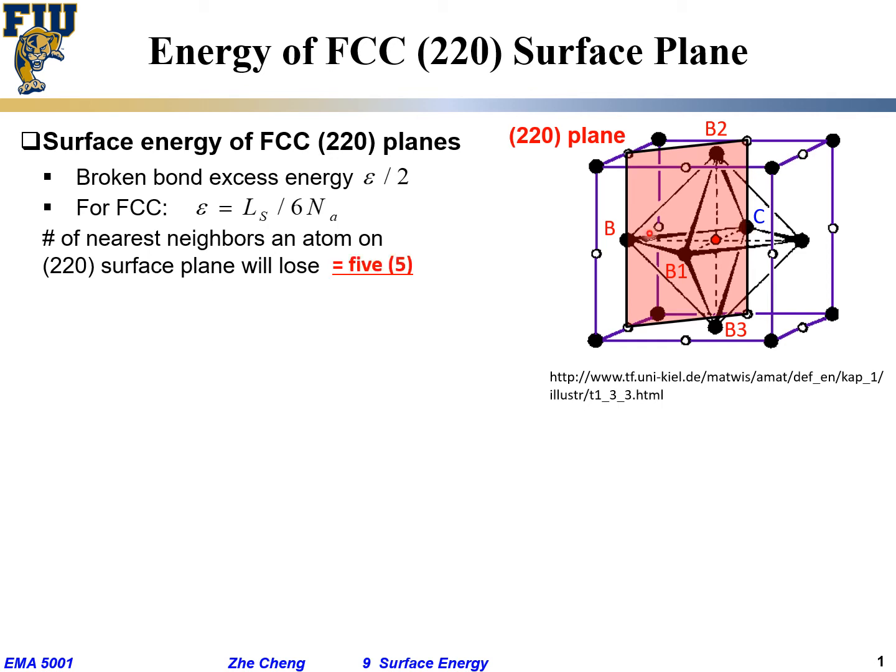And so, totally, we would lose so-called five atoms - five atoms: one directly on top of B (B1), B2, B3, and then on the other side, B4 and B5. So B2, B3, this actually should be B4 and B5. Totally, five of its nearest neighbors would be lost for this B atom within this shaded (220) plane.